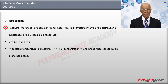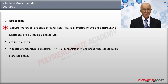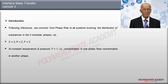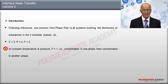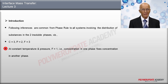The following inferences are common from the phase rule to all systems involving the distribution of substances in two insoluble phases: the number of compounds C equals 3, the number of phases P equals 2, so the degrees of freedom are 3. At constant temperature and pressure, F equals 1 — that is, the concentration in one phase fixes the concentration in the other phase.